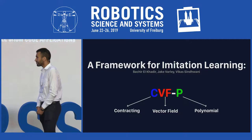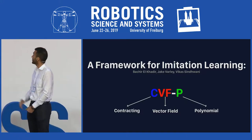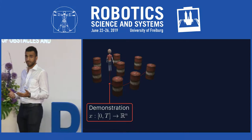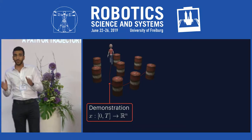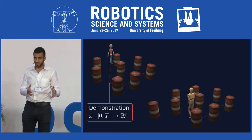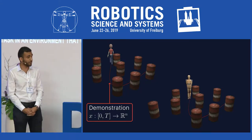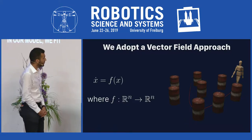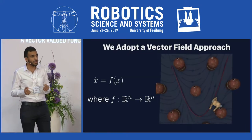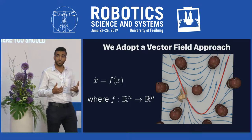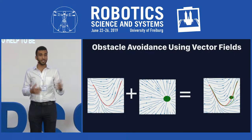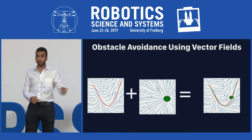In imitation learning, a human provides a demonstration for the task of interest — for example, walking around a bunch of obstacles. The demonstration is a path or trajectory indexed by time. The robot looks at this demonstration and extracts useful information necessary to replicate the task in an environment that could be dynamic or changing. In our model, we fit a vector field to the demonstration — a vector-valued function that tells you at every point in space where you should move next. Vector fields, unlike trajectories themselves, have the nice property of being additive, which helps us achieve obstacle avoidance in a very elegant way.